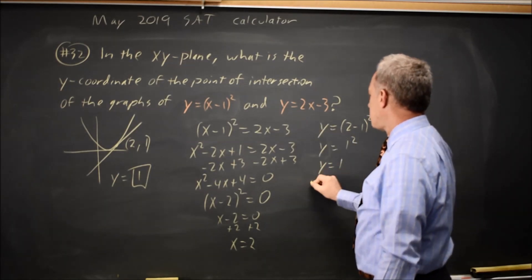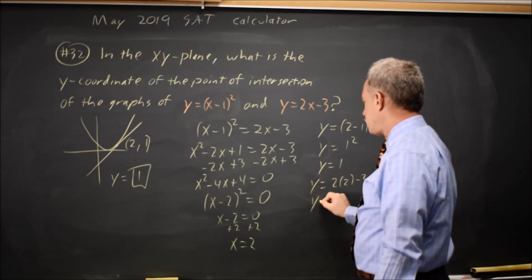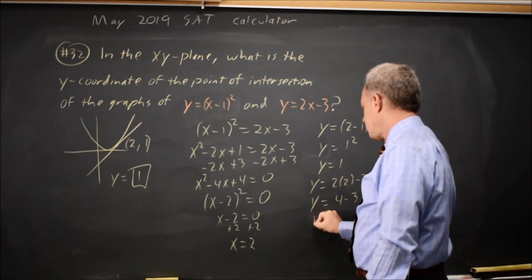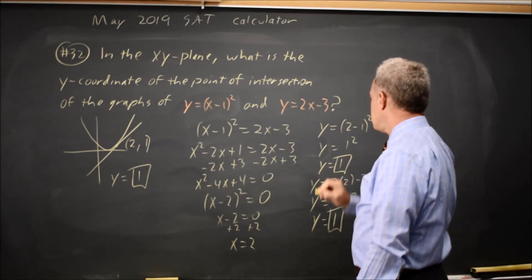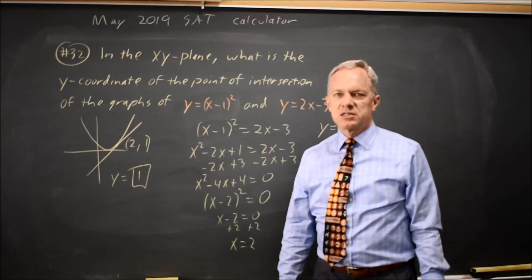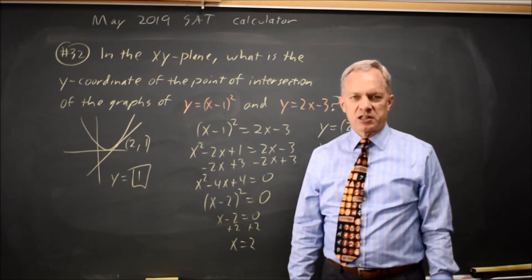In the other equation, y equals twice 2 minus 3, y equals 4 minus 3, y equals 1. Since I've got the same y value for x equals 2 in both equations, that confirms that it's the point of intersection, but I've already done that on the calculator.